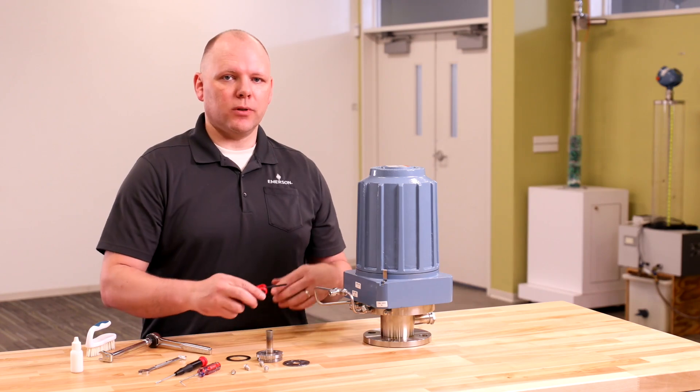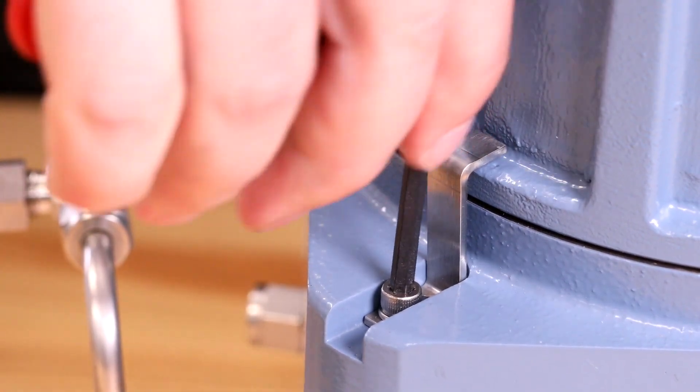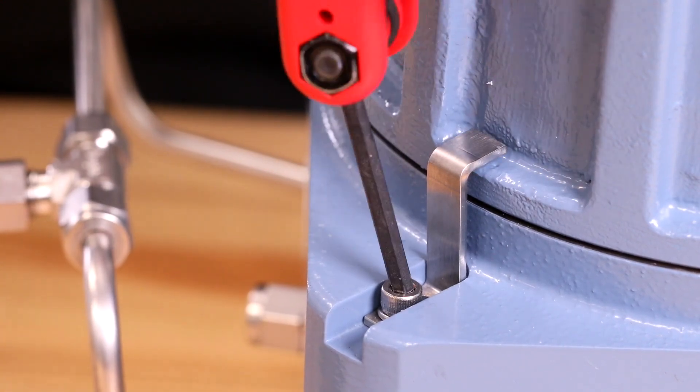To help ensure safety during replacement, make sure the power is disconnected and all components have cooled to room temperature. To begin, loosen the screw on the locking clip with a 4mm Allen wrench and slide the locking clip away from the cover, then re-tighten the screw.